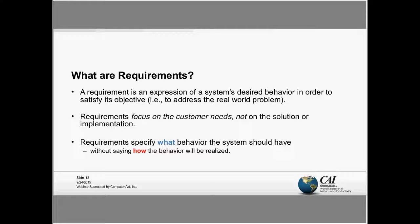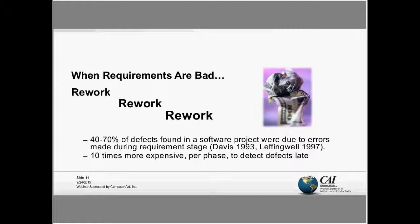When requirements are bad, there's a lot of costly work ahead. Several studies have looked at the cost of errors made during the requirements stage. One finding is that 40 to 70 percent of defects found in software projects were due to errors made during the requirements stage. These defects trickle down into design, implementation, and potentially out into the field. Barry Boehm at USC found that it is 10 times more expensive per phase to detect defects late. So if a defect in requirements costs one dollar to fix there, detecting it later becomes exponentially more costly.